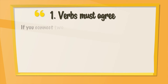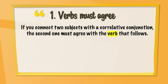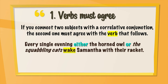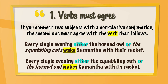Verbs must agree. If you connect two subjects with a correlative conjunction, the second one must agree with the verb that follows. Every single evening, either the horned owl or the squabbling cats wakes Samantha with their racket — "wakes" is plural because we're describing the squabbling cats, and "their" refers to the squabbling cats. In the reversed order: either the squabbling cats or the horned owl wakes Samantha with its racket — "wakes" is singular because we're describing the horned owl, and "its" is the pronoun referring to the owl.